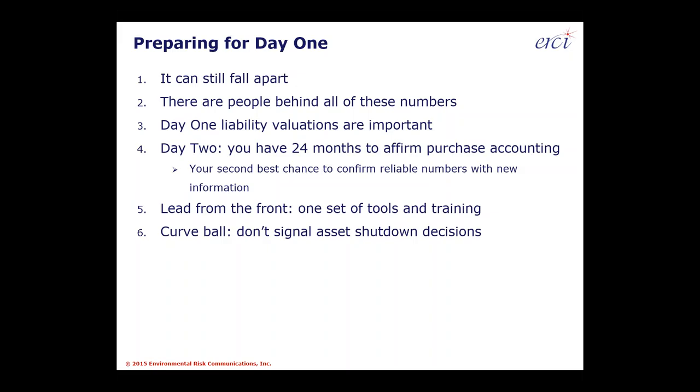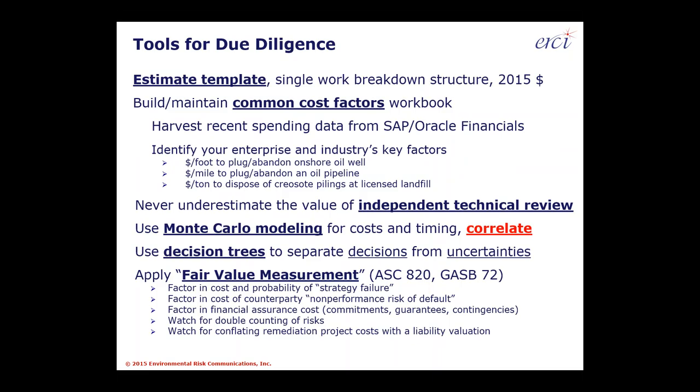Final curveball: don't signal any asset shutdown decisions. The tools we see as useful include using an estimate template — a single work breakdown structure, a comprehensive one based on 2015 US dollars, used for all sites undergoing due diligence. Second — vital — maintain a common cost factors workbook, harvesting data from your enterprise cost accounting system such as SAP, Oracle Financials, or JD Edwards, and identifying cost factors relevant to your industry.